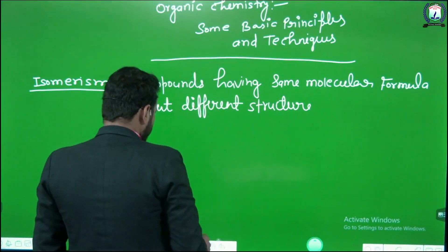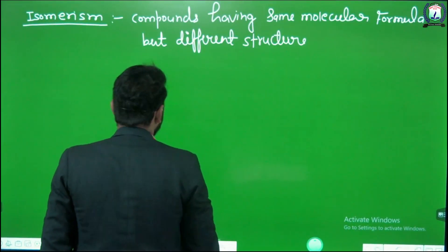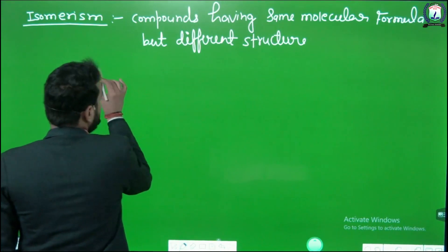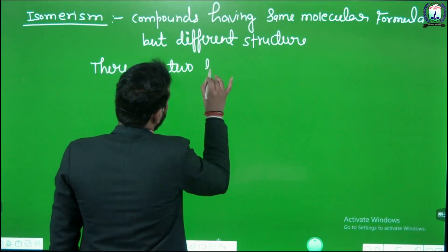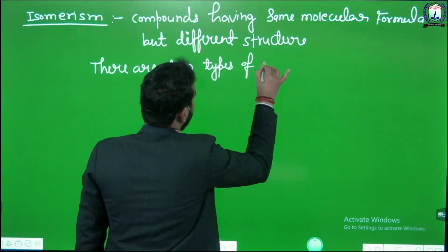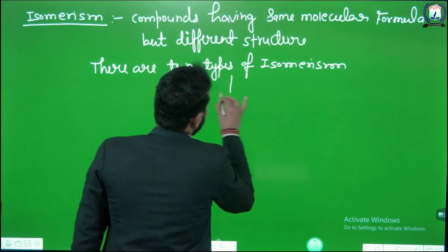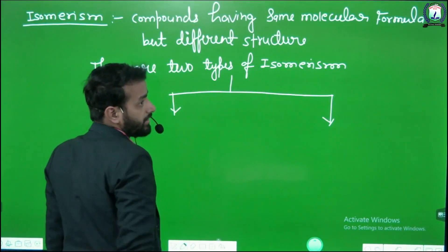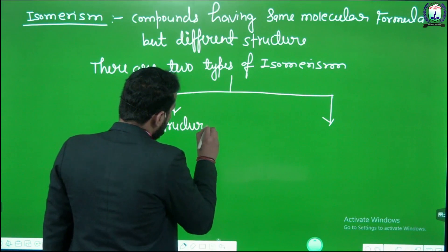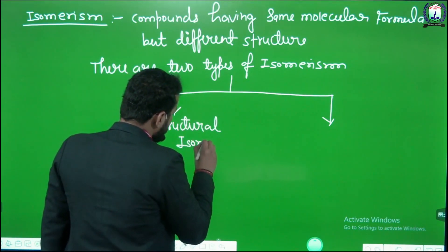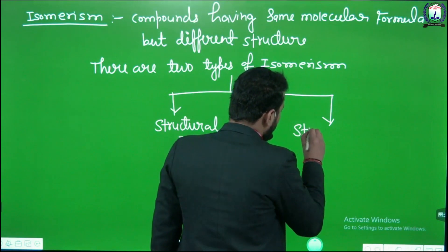There are two types of isomerism: first is structural isomerism, and second is stereoisomerism.